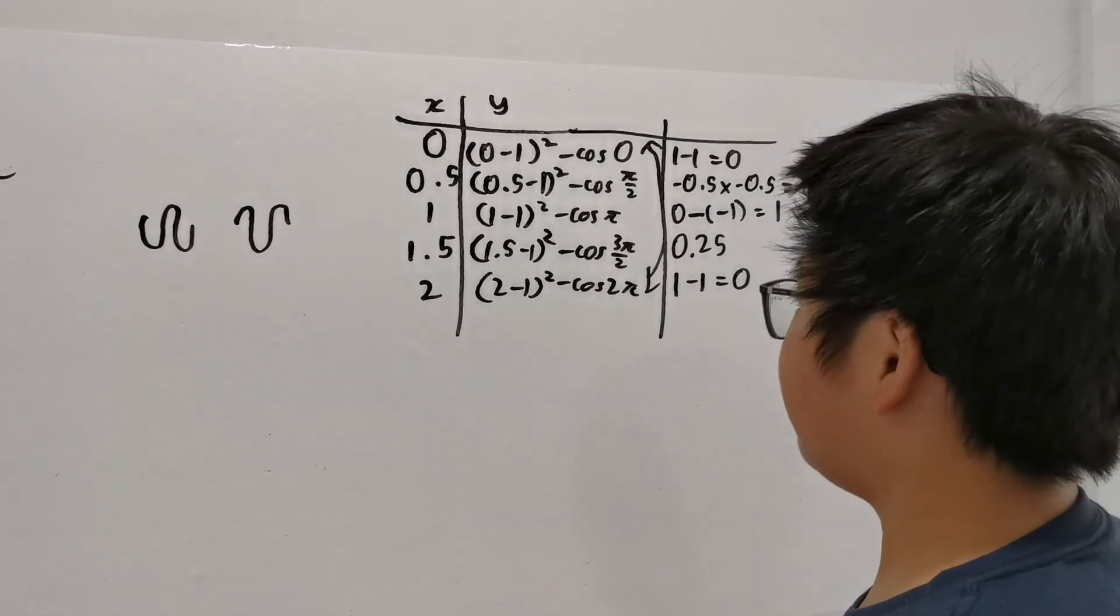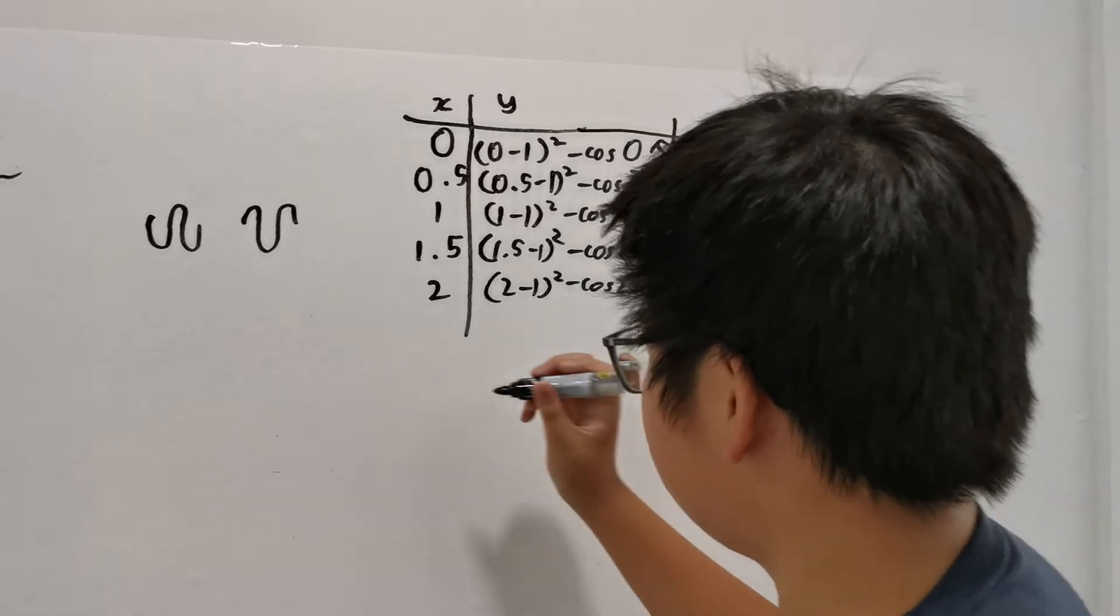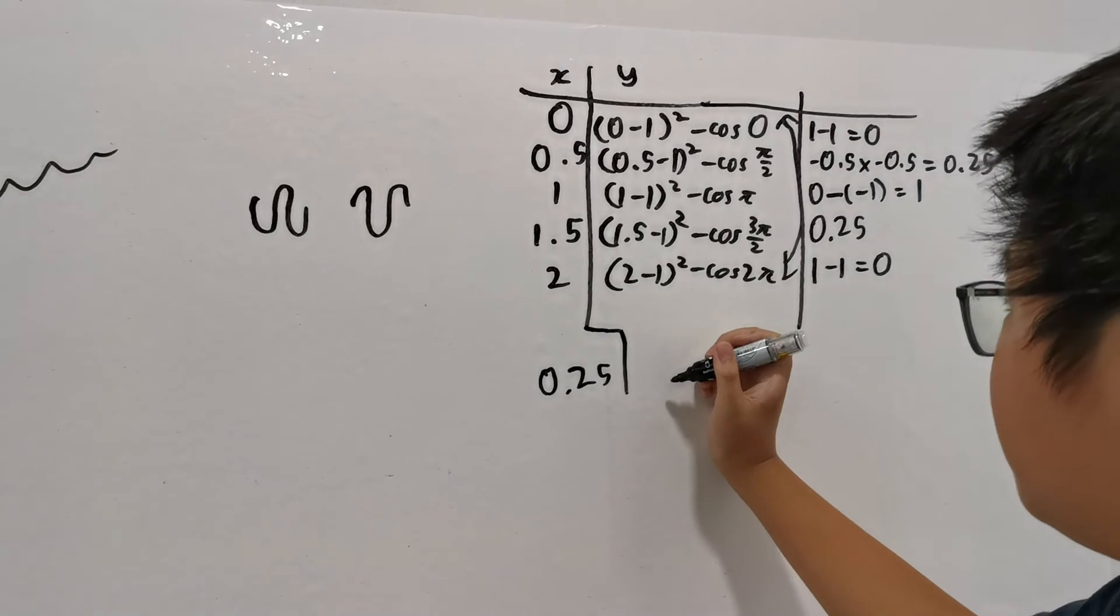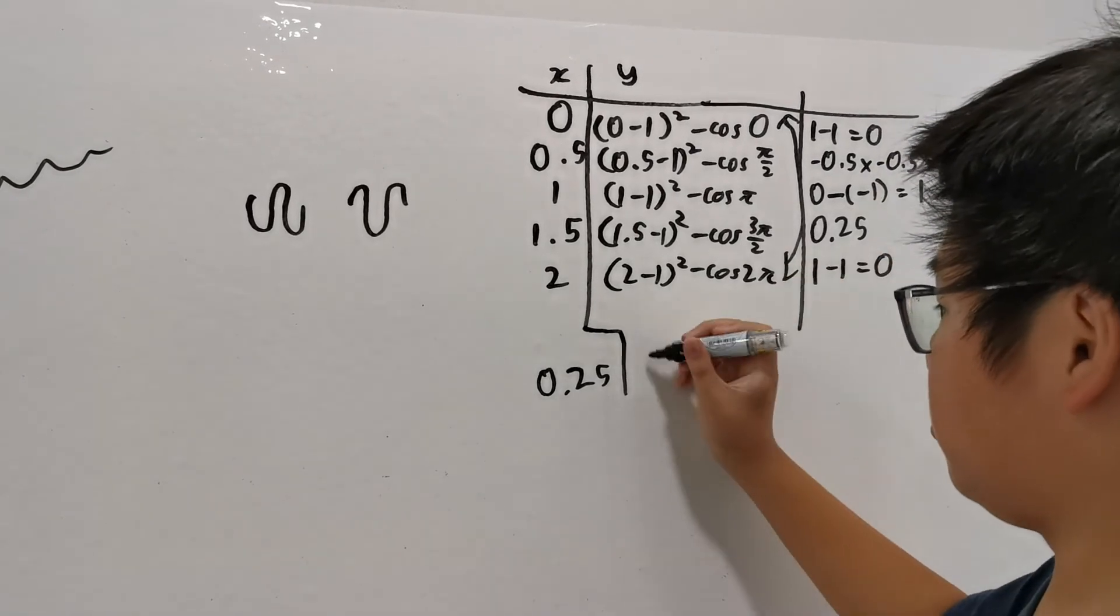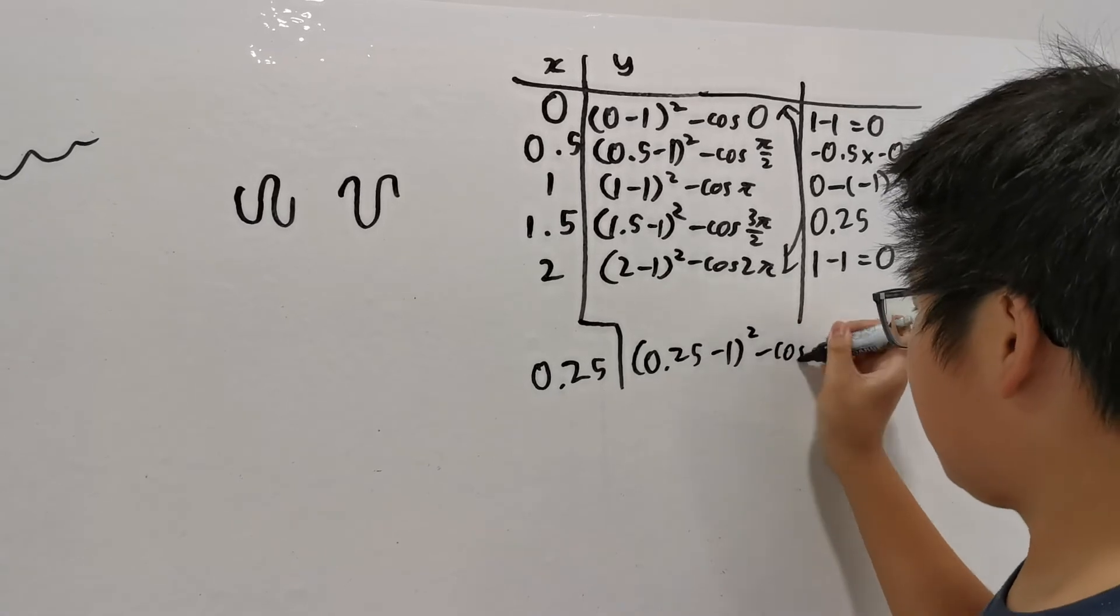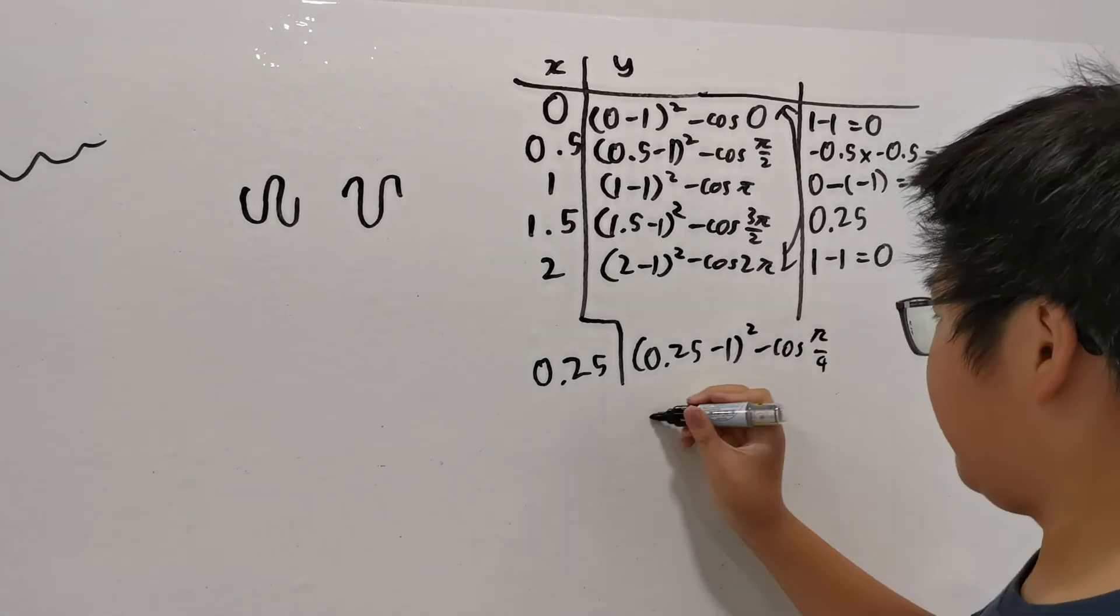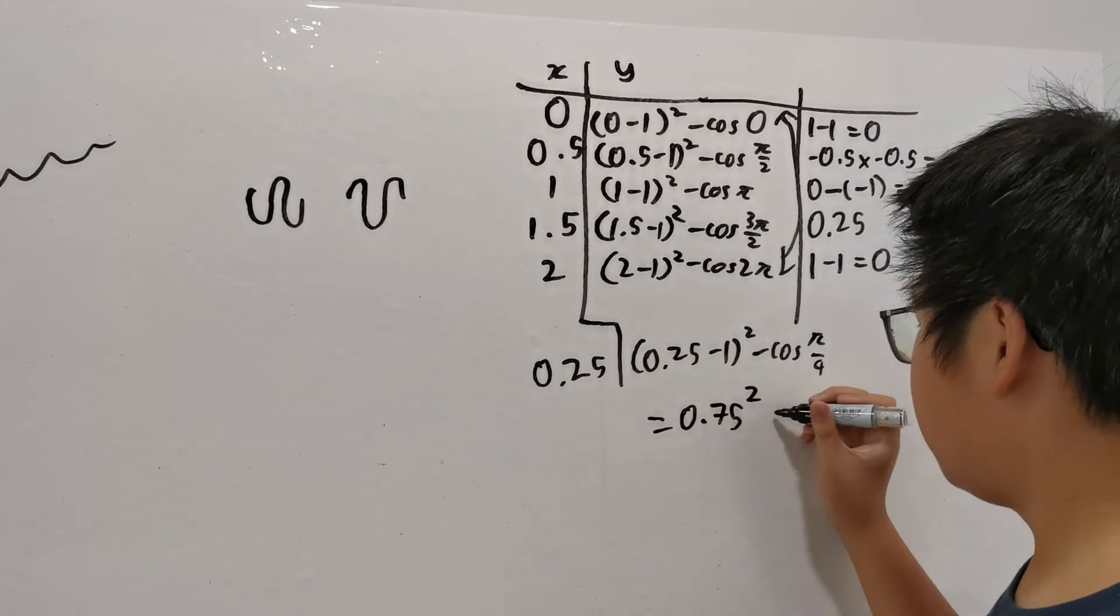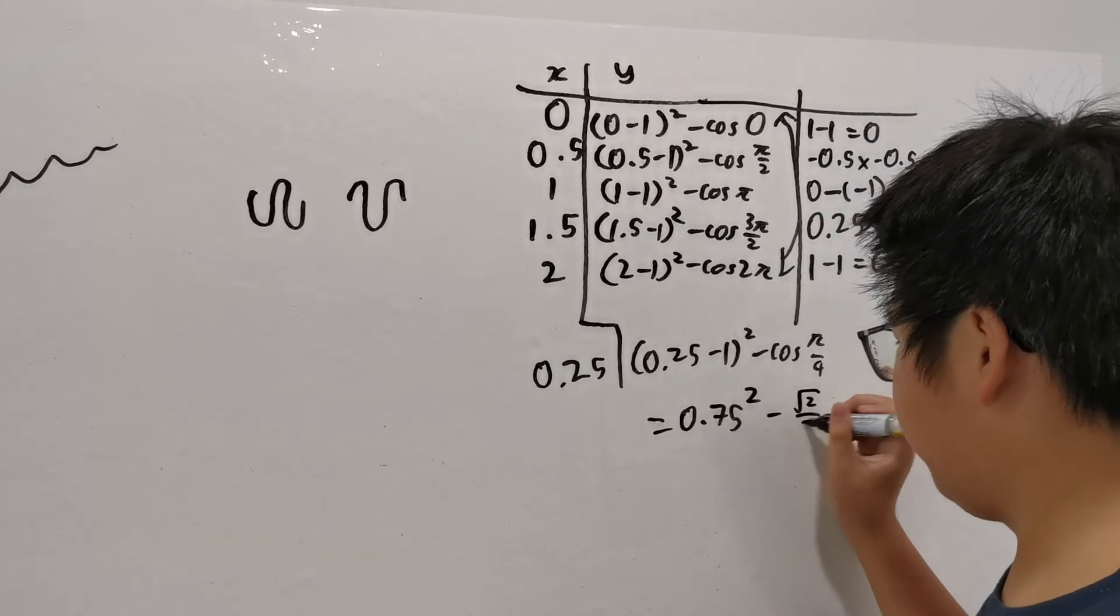This is not enough, so we'll find. Let's see, 0.25. Will there be a change? Now, this will calculate to 0.25 minus 1 squared minus cos pi over 4 equals to 0.75 squared minus root 2 over 2.